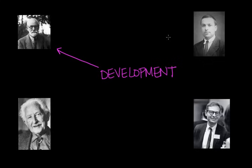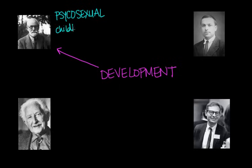These four men had four different theories of how we develop. The first we're going to look at is Sigmund Freud. Freud proposed the psychosexual theory of development, which describes how personality develops during childhood. He believed that early childhood was the most important period in which most of our personalities developed — he said most of our personality is established by the age of five, and that early experiences play a large role in personality development and continue to influence behavior later in life.